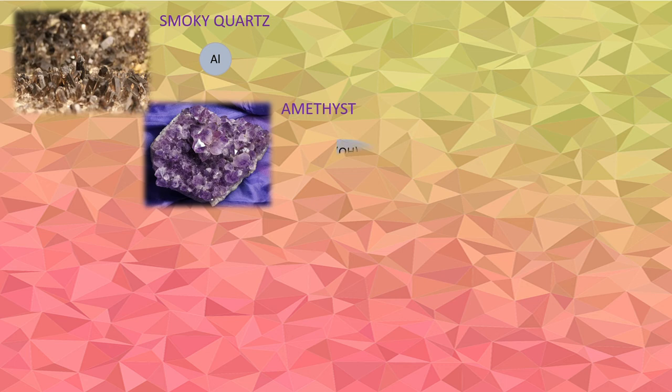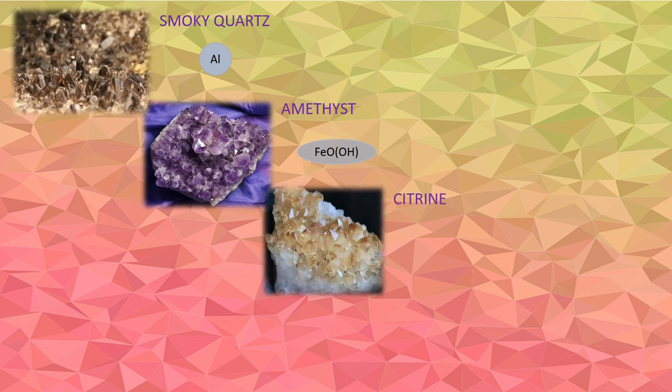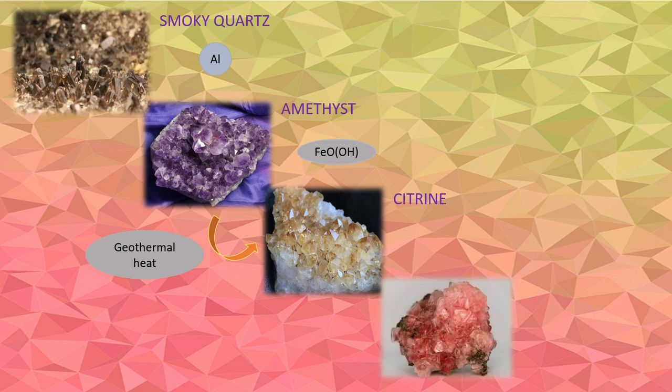Natural citrine is created with geothermal heat source from the mantle by heating amethyst. The pale pink color occurrence in rose quartz is due to trace amounts of titanium, iron, or manganese. Recent research also suggests the pink coloration is caused by silicate mineral fibers.